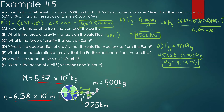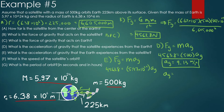Part e asks for the acceleration of gravity the Earth experiences from the satellite. Even though they have the same force, the Earth is much more massive, so its acceleration will be much less. Force equals mass times acceleration: 4563.8 equals 5.97 times 10 to the 24 times acceleration. The Earth experiences about 7.64 times 10 to the negative 22 meters per second squared — essentially negligible, with 21 zeros in front of the seven.